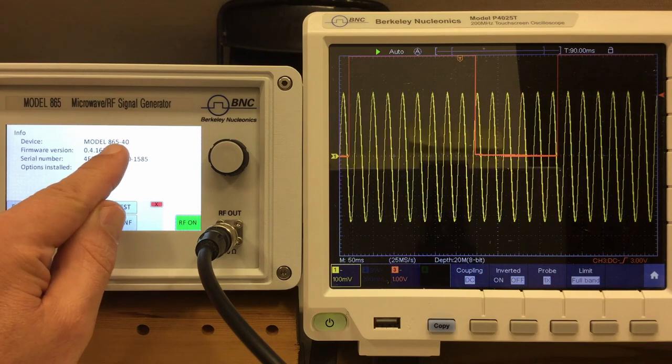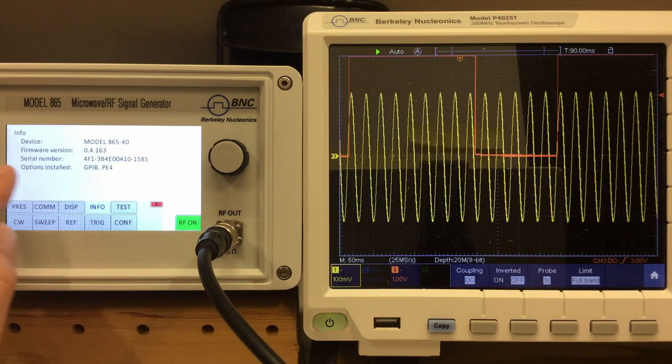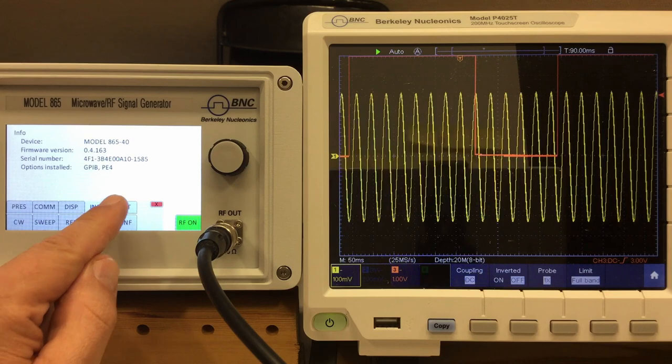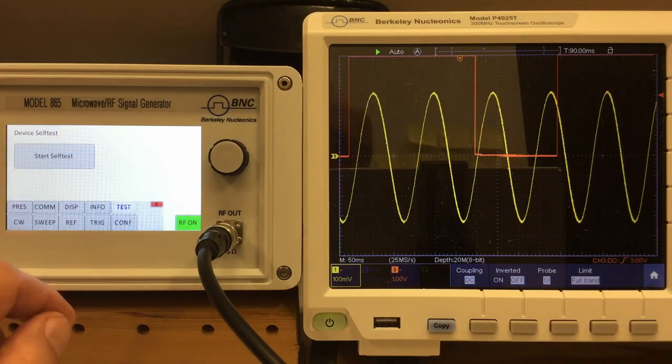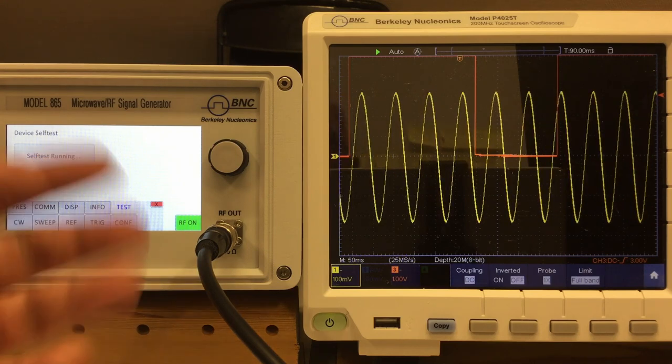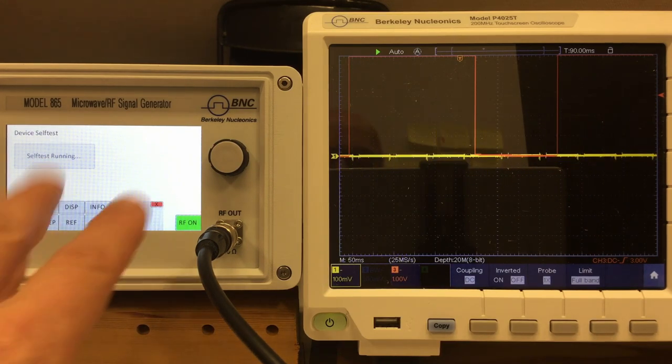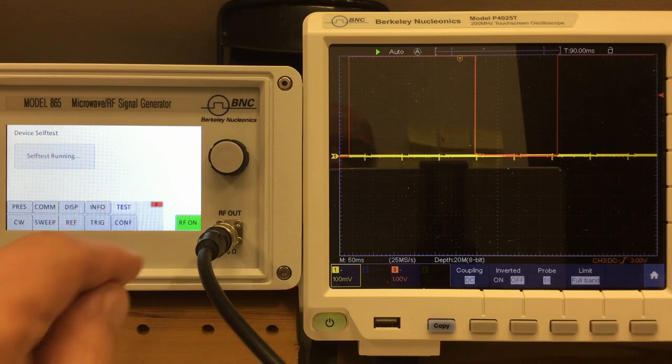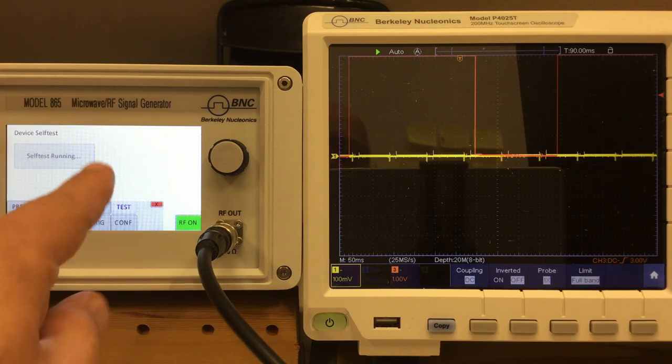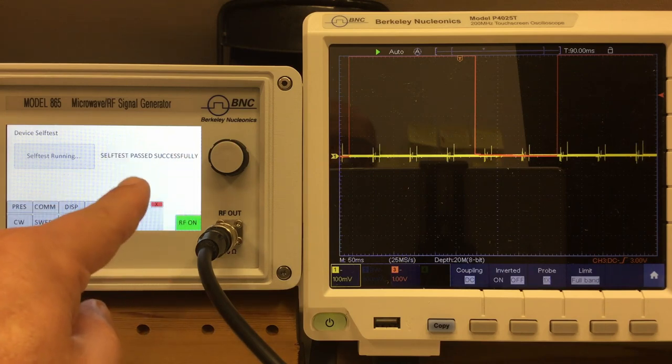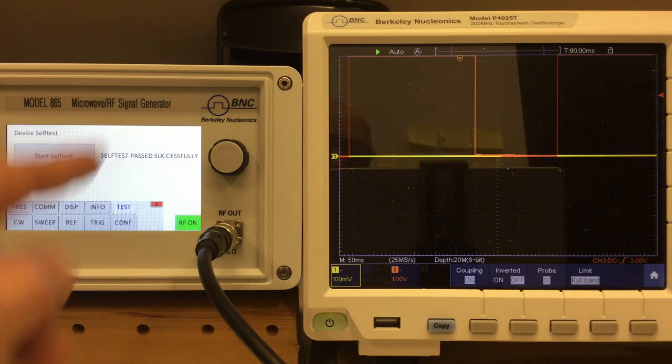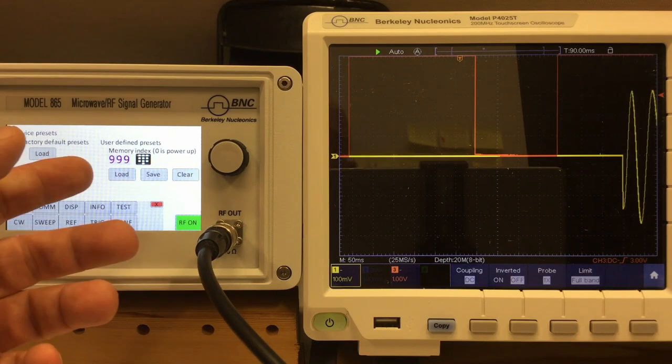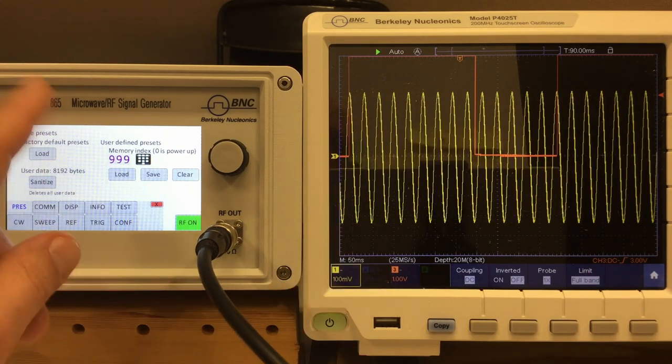Now, info, basically the same information you already seen when booting the device. The model number, 865-40, 40 GHz, firmware version, serial number, and the options installed. And of course, there is a test. To be more specific, a self-test, and we can start that, and it doesn't take too long. Oh, I lost a little bit of my camera here. I got a moiré. Worse than normal, but you can see what's going on. And it should be over in a few seconds. Yeah, a self-test passed successfully. And after you do a self-test, you better go back to your presets and load your stuff again. And you're back in business.